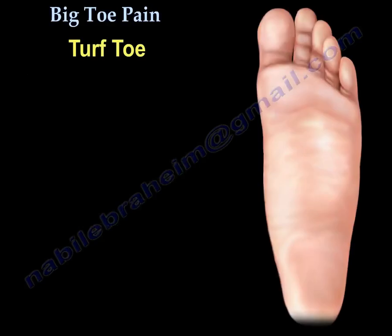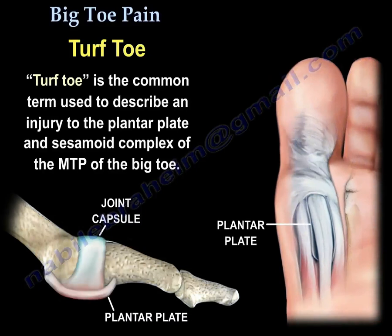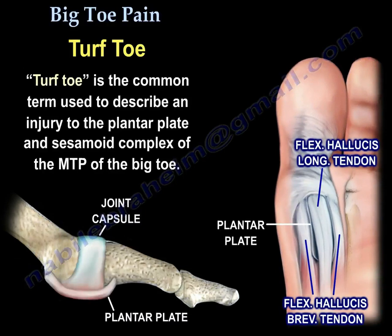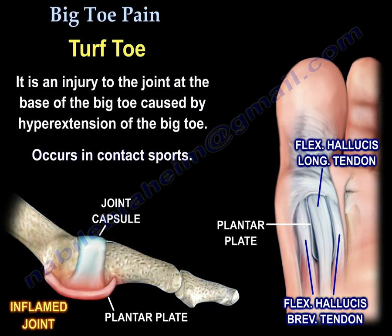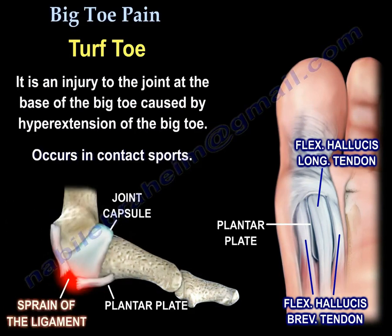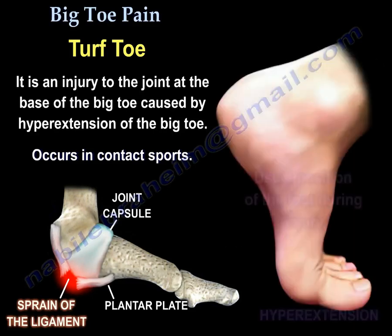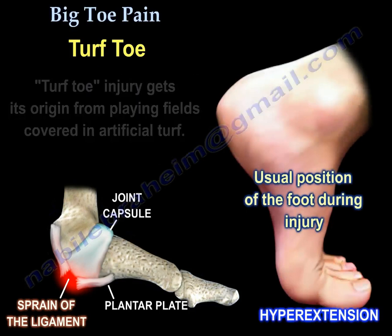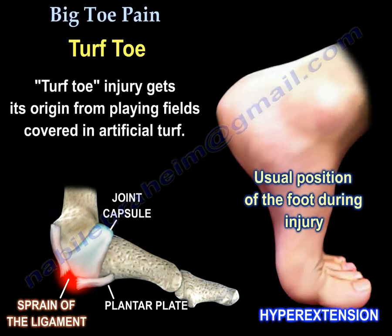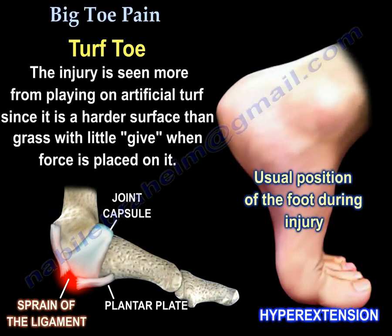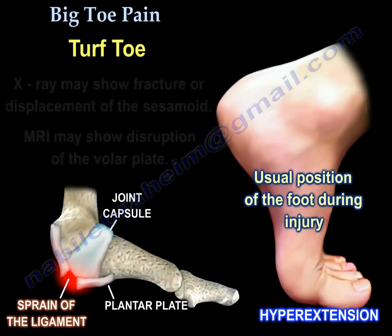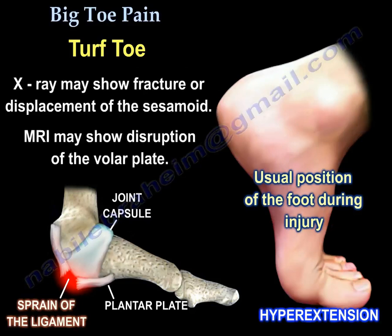Turf toe is the common term used to describe an injury to the plantar plate and the sesamoid complex of the MTP joint of the big toe. It is caused by hyperextension of the big toe and occurs in contact sports. The injury gets its name from playing fields covered with artificial turf, which is a harder surface than grass with little give when force is placed on it. X-ray may show fracture or displacement of the sesamoid, and MRI may show disruption of the plantar plate.